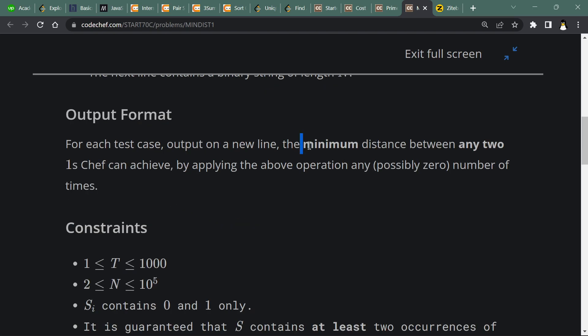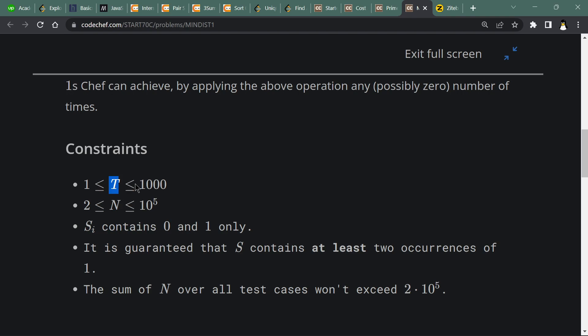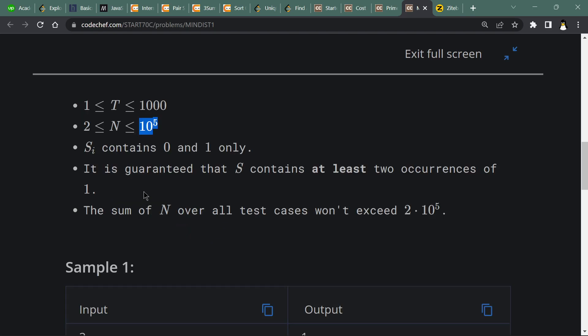We have to output on a new line the minimum distance between any two ones. The constraints are T ranges from 1 to 10^3 and N is from 2 to 10^5.